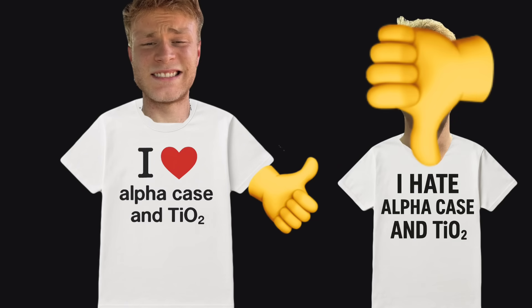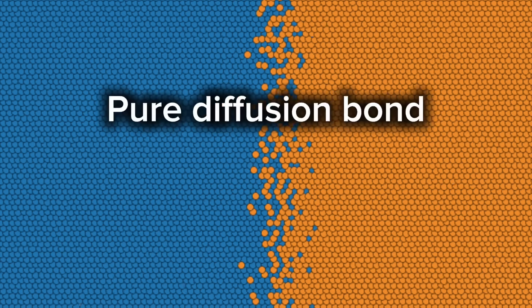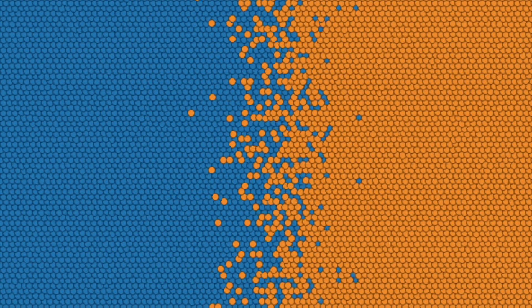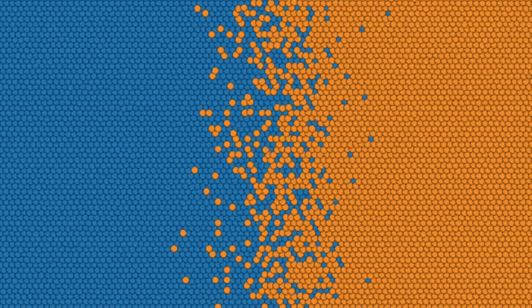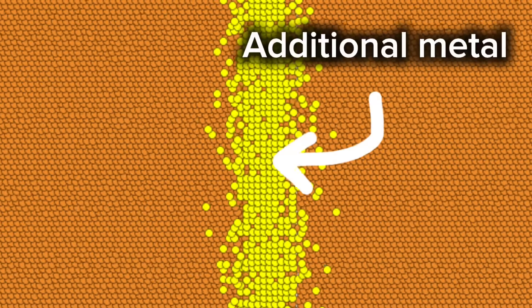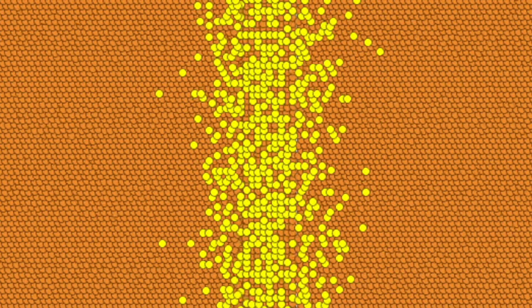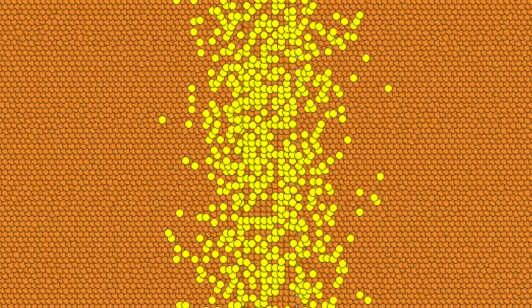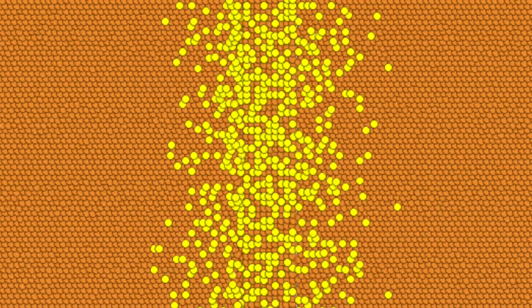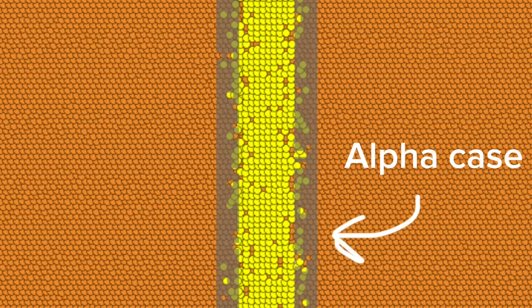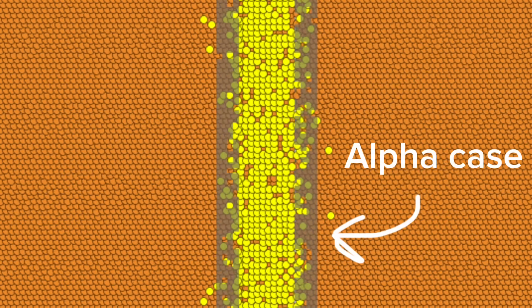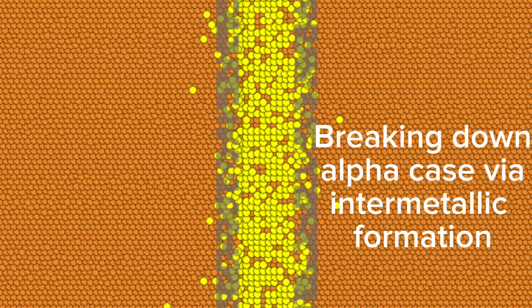So, instead of a diffusion bond, what if I relied on a chemical reaction to bind the two titanium pieces? What if between the two pieces of titanium, I included a metal that will chemically react with the titanium to bond the two pieces together? In other words, what if I formed an intermetallic interface? This approach doesn't care if there's alpha-case, because the other metal would just react with the alpha-case, it wouldn't have to diffuse through it.